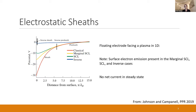Starting with electrostatic sheaths: the classical sheath discovered by Langmuir is called the classical or device sheath. In this plot we have potential versus distance from the surface normalized to the Debye length, showing four different types of sheaths. The first is the classical-like sheath where you have no emission. The other three — marginal SCL, SCL, and inverse — all require surface electron emission, which can be achieved by thermionic emission or, for SCL and marginal SCL, secondary electron emission.